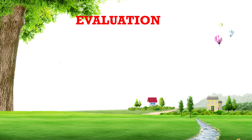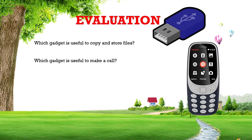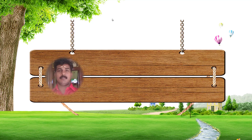From this lesson we learned the gadgets and the uses of these gadgets. Let's check - which gadget is useful to copy and store files? Yes, that is the pen drive. Which gadget is useful to make a call? Yes, the phone is the gadget useful to make a call. Which gadget is useful to produce light? Yes - torchlight. This torchlight is useful to produce light. From this lesson we learned the gadgets, uses of gadgets, and types of gadgets.